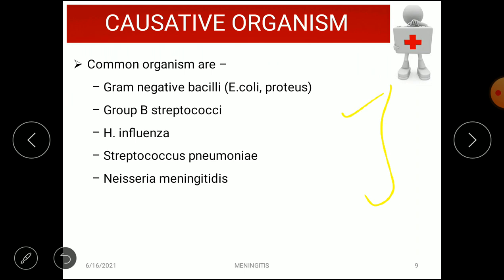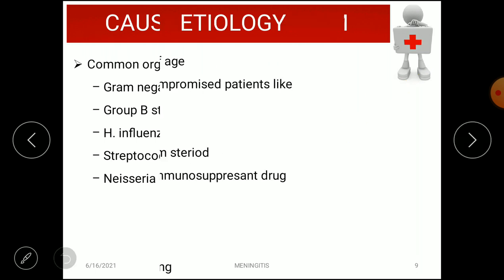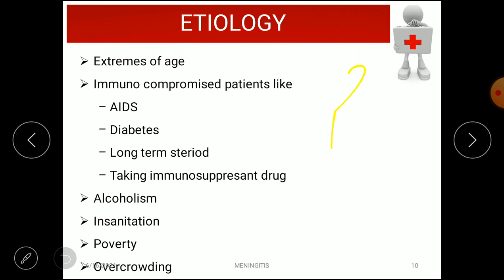The causative organisms include gram-negative bacilli such as E. coli, Group B Streptococci, H. influenzae, Streptococcus pneumoniae, and Neisseria meningitidis. Other etiological factors include extremes of age, immunocompromised states like AIDS and diabetes, long-term steroid use, immunosuppressant drugs, alcoholism, poor sanitation, poverty, and overcrowding.